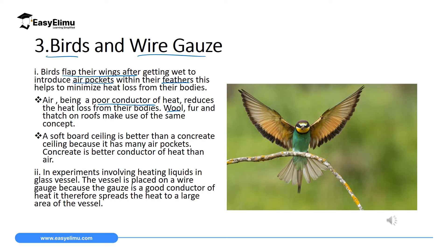The same concept applies to wool, fur, and even thatched roofs — those houses which are roofed using grass. When you have a thatched roof, the air trapped there will prevent heat coming from the sun into the house, and it will also prevent heat loss from the house to the environment when it is very cold outside.